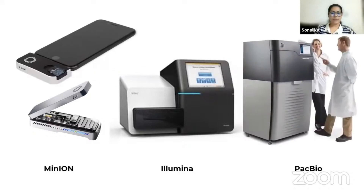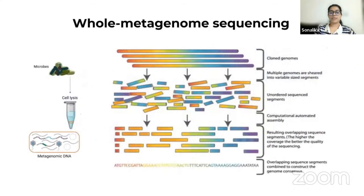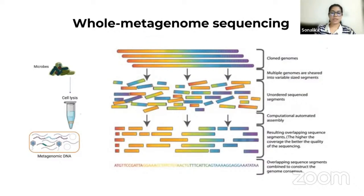Now let's briefly discuss the types of metagenomic sequencing techniques. One is whole metagenome sequencing, or shotgun metagenome sequencing — a relatively new and powerful sequencing approach that provides insights into community biodiversity and function.